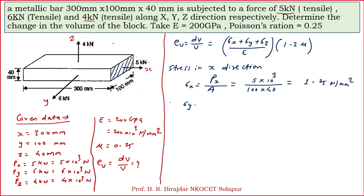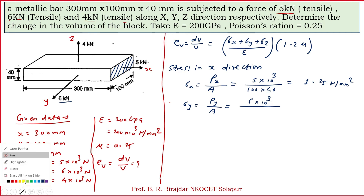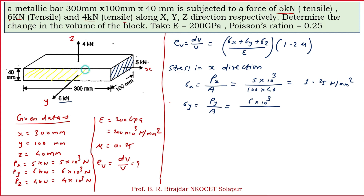Similarly, stress in y direction equals the load in y direction divided by the cross-sectional area resisting deformation. Load in y is 6 kilonewton, so 6×10³ newton. The resisting area is 300×40. So σy = 6×10³ / (300×40) = 0.5 newton per mm square.